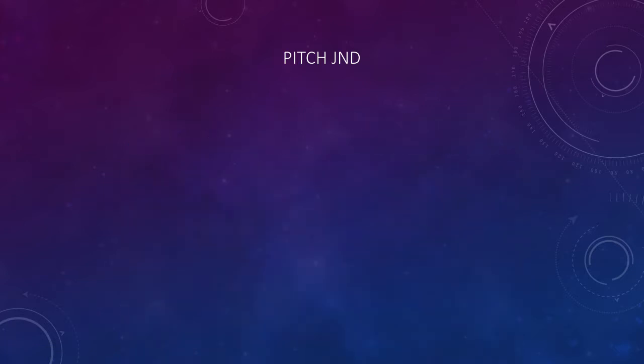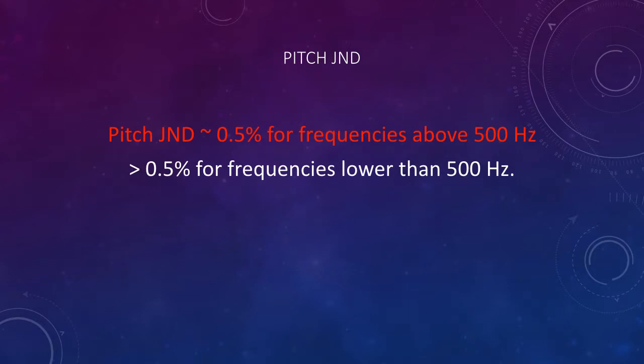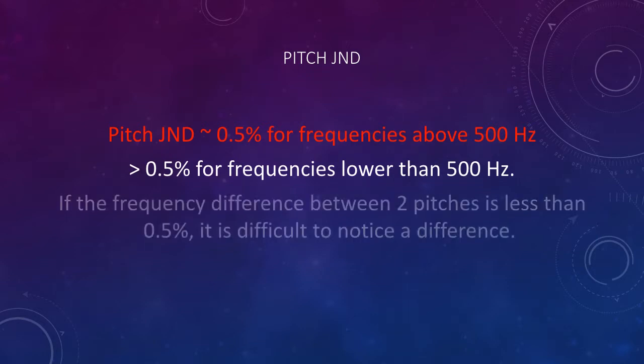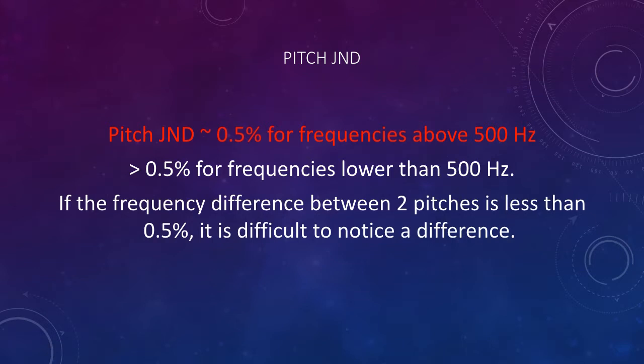Pitch JND tends to be about 0.5% of the frequency for frequencies above 500 Hz, and greater than 0.5% for frequencies lower than 500 Hz. That means if the frequency difference between two pitches is less than 0.5%, it is difficult to notice a difference.